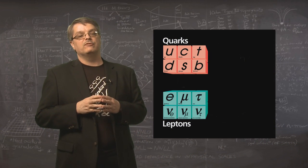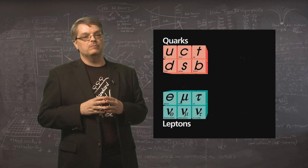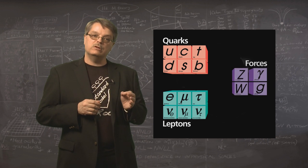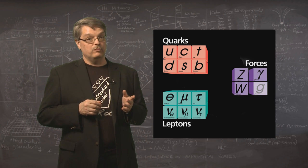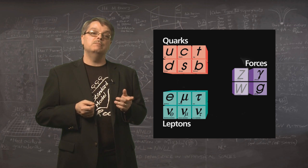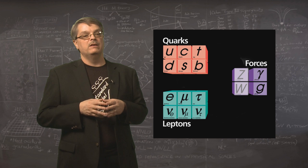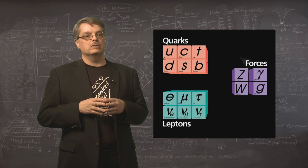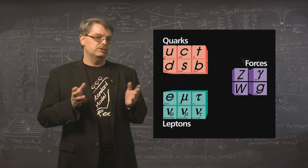All the subatomic forces work by exchanging a different kind of particle. The particles are the gluon for the strong nuclear force, the photon for the electromagnetic force, and the W and Z bosons for the weak nuclear force. Physicists speculate about a particle called the graviton for gravity, but this has not been demonstrated.